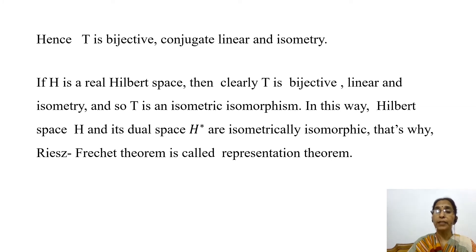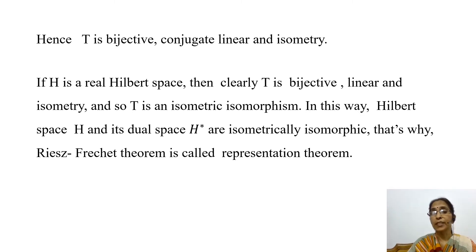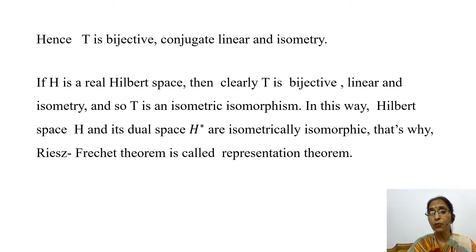We have shown that T is one-to-one and onto — that is, bijective — T is conjugate linear, and T is an isometry. If H is a real Hilbert space, then T is bijective, linear, and isometric, so T is an isometric isomorphism. In this way, Hilbert space H and its dual space H star are isometrically isomorphic. That is why the Riesz representation theorem is called a representation theorem.